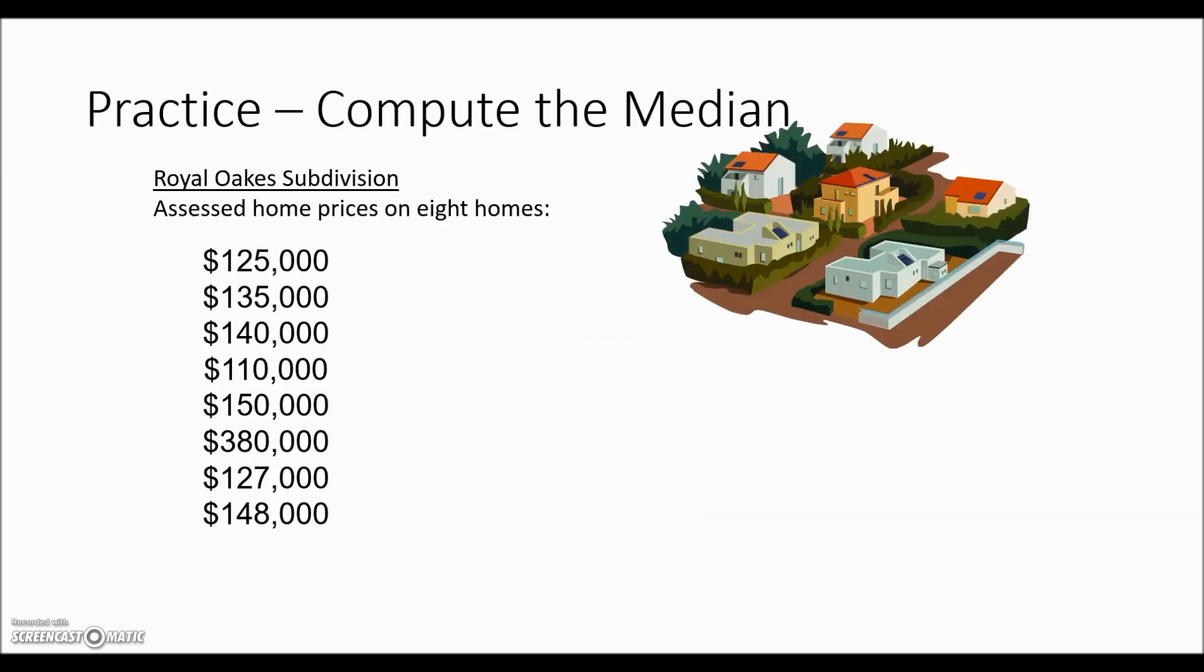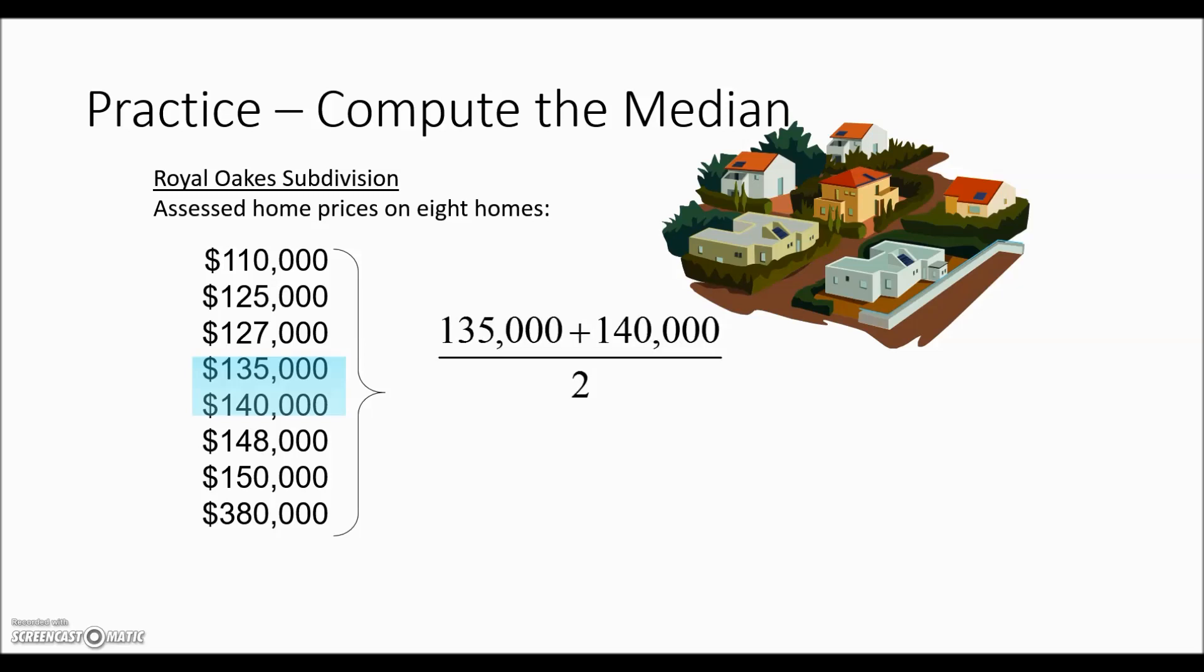The median is a better measure of central tendency for this example because it tends to tune out extremely large or extremely small values. In this case when we put these values in numerical order and we're looking for the median, since there's eight our median will be the average of the numbers on either side of the middle. So here we're only going to average the $135,000 and $140,000 by adding them and dividing by two. The median, which is a truer measure of central tendency and representative of most of the houses is $137,500 where if you remember the mean was over $163,000. It was pulled or skewed higher because of this extremely large value. The median tunes out those extreme outlier values whether they're small or larger than the rest of the data.